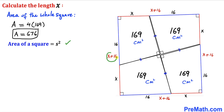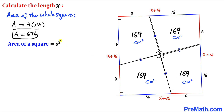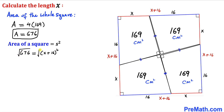In our case our side length is x plus 16 across the board. So let's go ahead and fill in the blanks in this formula: area in our case is 676, equal to our side length (x plus 16) whole squared. Now let's go ahead and undo the square — let's take the square root on both sides. The square and square root cancel, so we end up with x plus 16.